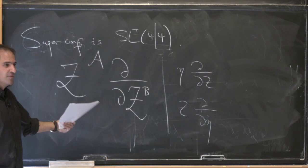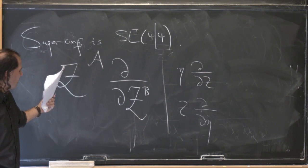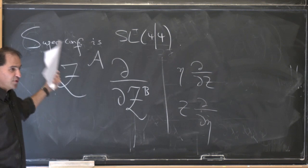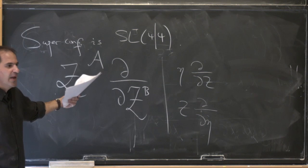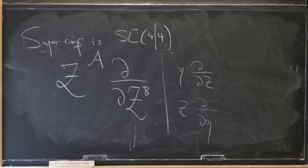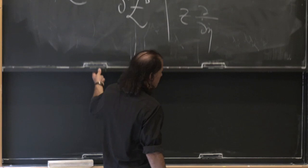So the generators are just z · d/dz's. The bosonic ones are z · d/dz; the super ones are eta · d/dz and z · d/deta. Some of those are super-conformal, some are special super-conformal. And finally, who is eta · d/deta? Eta · d/deta are the rotations on the etas — that's the R-symmetry, the thing that rotates all those indices together.